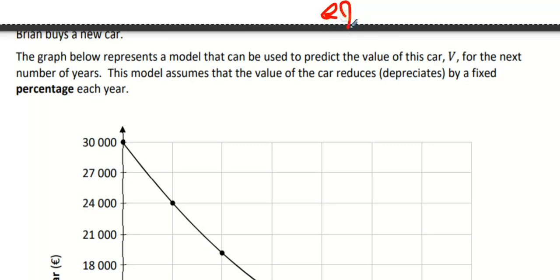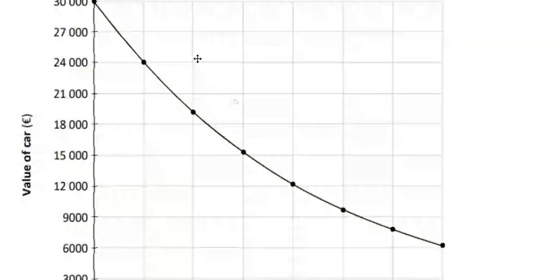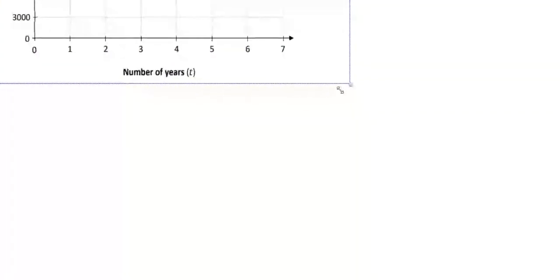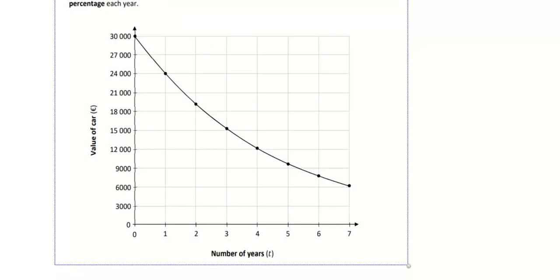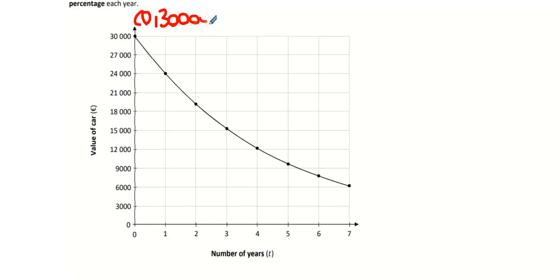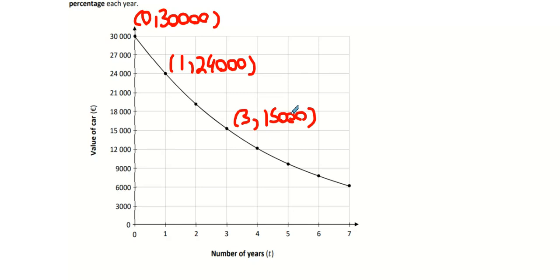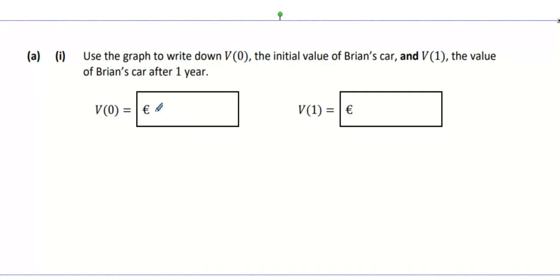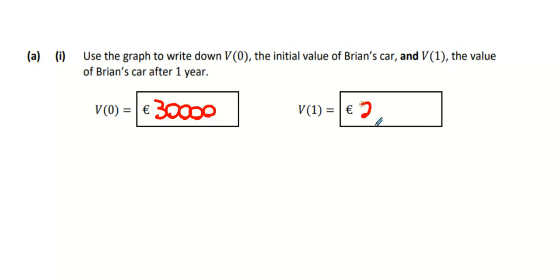A graph models a car's value as it depreciates by a fixed percentage each year. How much was the car when brand new? At zero years it's 30,000. After year one it loses 6,000 euro, dropping to 24,000. After three years it's around 15,000. The initial value is 30,000.